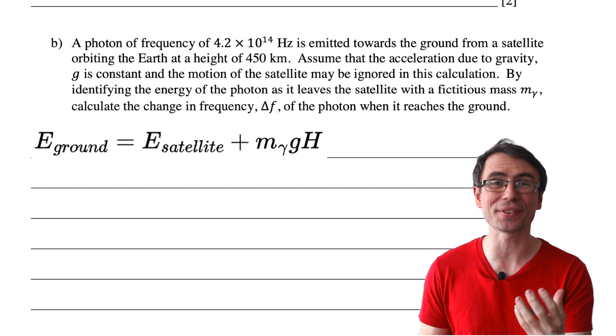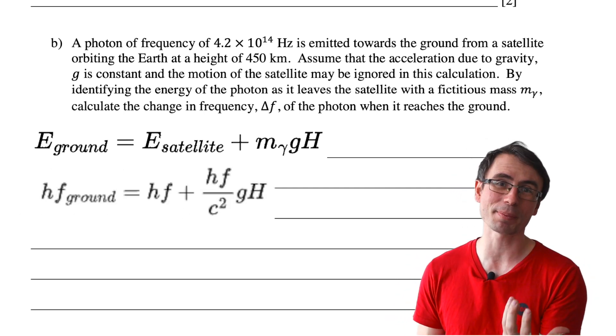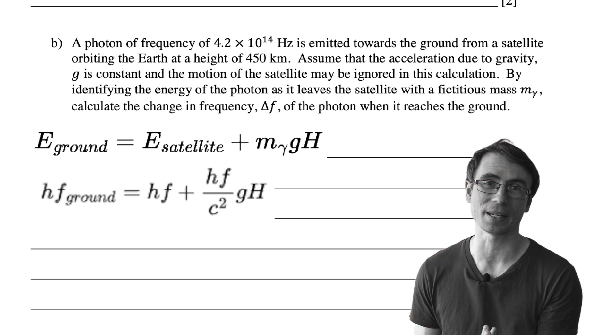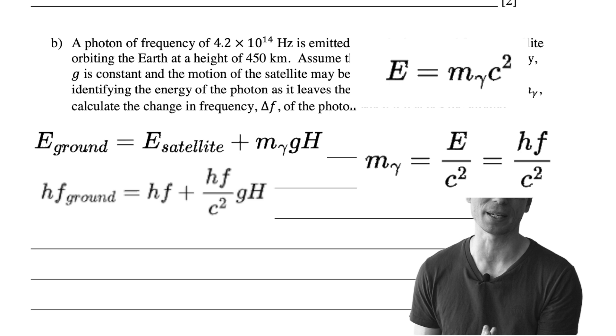In quantum physics, the energy of an individual photon is given by h times the frequency. Please note that the last term in this equation comes from E = mc². Using the fictitious mass and rearranging for it, we get that it's equal to E over c². So if the energy of a photon is hf, then the fictitious mass will be equal to the energy hf divided by c².